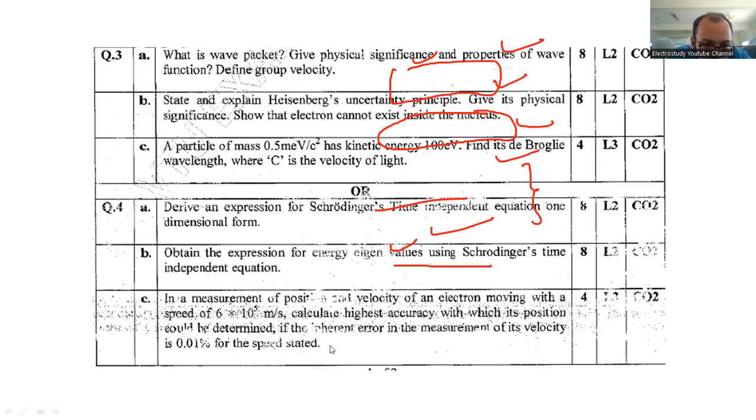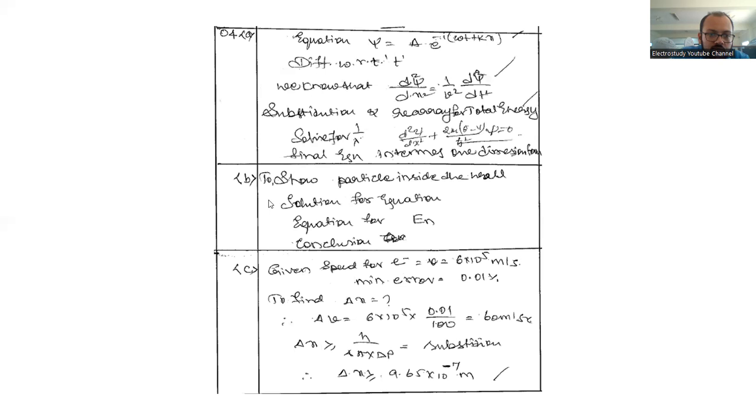Question number 4c: there is a numerical example. You have to calculate the highest accuracy with which the position would be determined if the error in the measurement of velocity is 0.001 percentage for the speed stated. Write down the given data: minimum error, then calculate delta v. You can easily calculate. Apply the condition. The ultimate answer will be 9.65 into 10 to the power minus 7 meter.